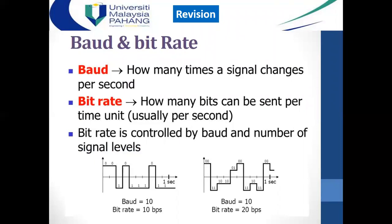Just a revision of a few previous terms from our previous lesson. First is baud rate — how many times the signal changes per second, or how many symbols are transmitted per unit time. Bit rate is how many bits are transmitted per unit time. Bit rate is controlled by baud rate. Here in this figure, the bit is how many data or bits are involved per symbol.